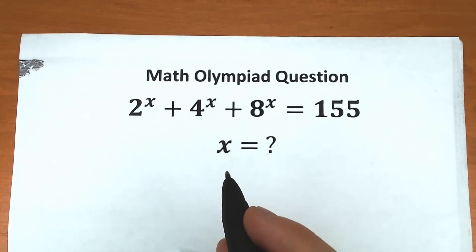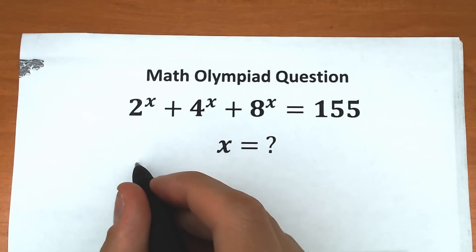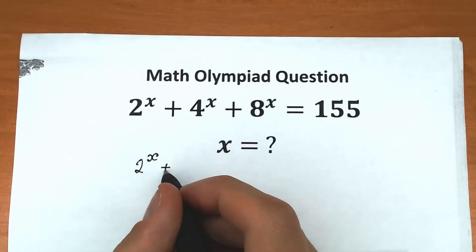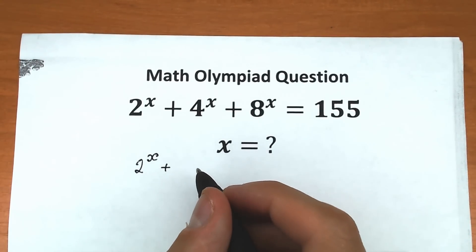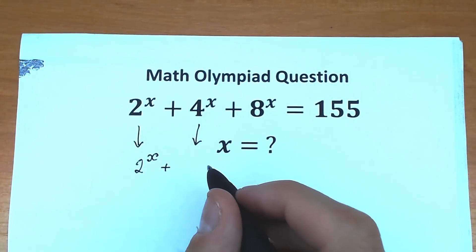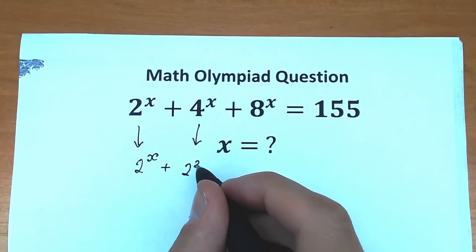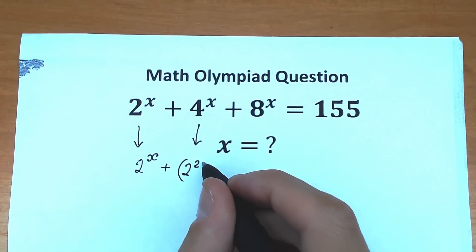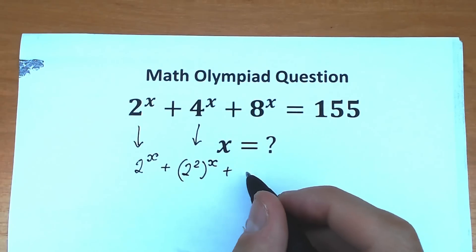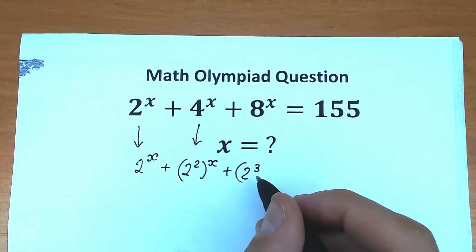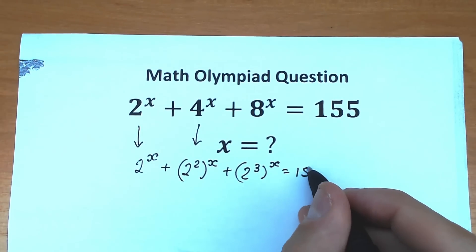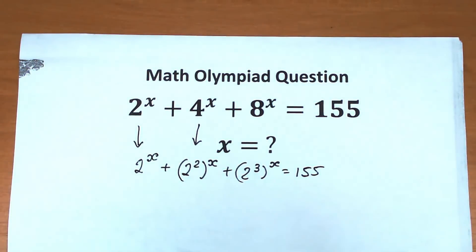So let's rewrite the equation. We have 2 to the x, plus instead of 4 to the x let's write 2 squared all raised to the power x, and instead of 8 to the x let's write 2 cubed raised to the power x, which is equal to 155. This is our first step — we just rewrote the expression.